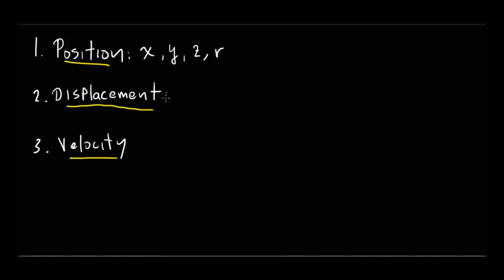Displacement is similar to the concept of distance, but it's a little bit different. Displacement is simply the change in position — delta x for a change along the x-axis, delta y for the y-axis, etc. The distinction: imagine if I were to run one mile east and then turn around and run one mile back west. The distance covered is two miles, but the displacement is zero, because my starting and ending positions are the same. Direction is relevant for displacement but not for distance.